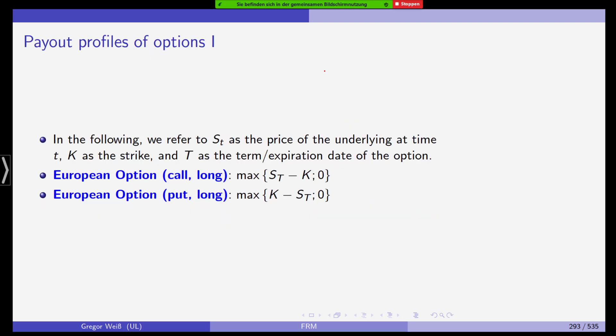So, we'll start with the very simple plain vanilla European call and put options. ST is the price of the underlying at any time T. K is the strike price for which you can exercise the option. And T is the term or expiration date. Then the payout profile at maturity for a European call long is the maximum of ST minus K or 0. And for a put it's maximum of K minus ST or 0.